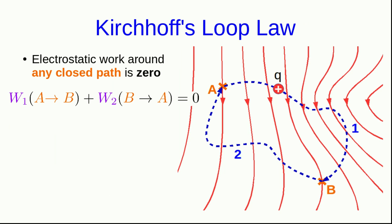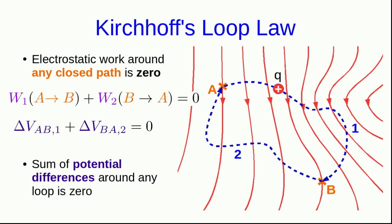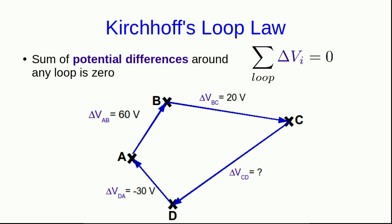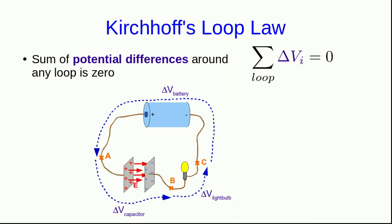The fact that electrostatic work around any closed path is zero has consequences for potential difference, and it's going to be a particularly useful consequence. Since the potential difference is just the negative of the electrostatic work along the path divided by the probe charge, that tells us that the sum of potential differences around any loop is also zero. This is something that is called Kirchhoff's loop law, and it's completely general. The sum of potential differences around any loop is always zero. And although I've been drawing it for seemingly empty space with E-fields in it, where this law actually comes into its own is in circuit analysis, where it turns out to be very useful for finding potential differences across devices within a circuit.